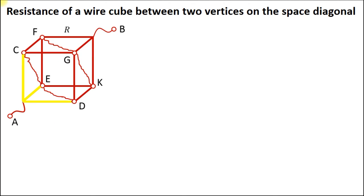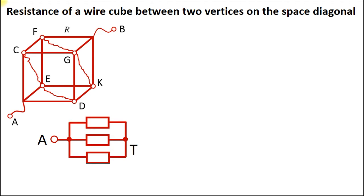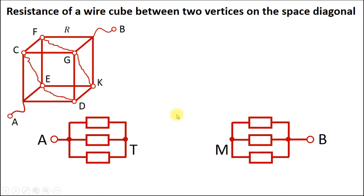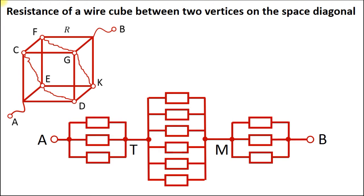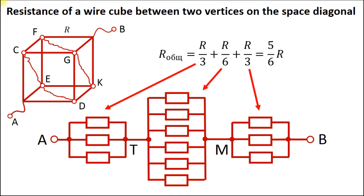These three edges starting at point A and ending at point T are actually in parallel connection. The resistance of this construction is R over 3. We merged points C, E, and D into one junction T. We also have the same construction of three resistors in parallel at the opposite corner of the cube — we merged points F, G, and K into one junction M. The other six edges starting at point T and ending at point M are also in parallel, giving a resistance of R over 6. All of these segments are in series, so the total resistance equals 5R over 6.